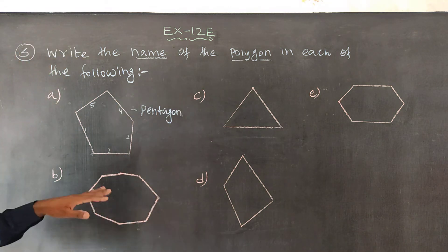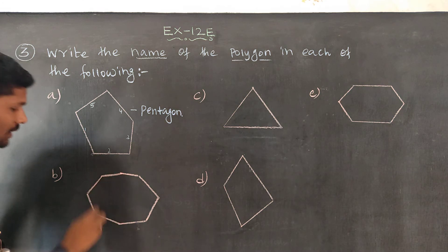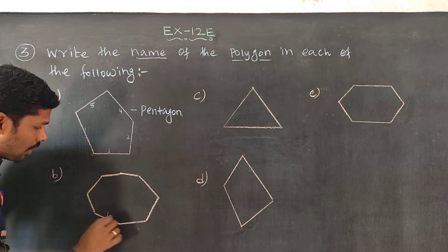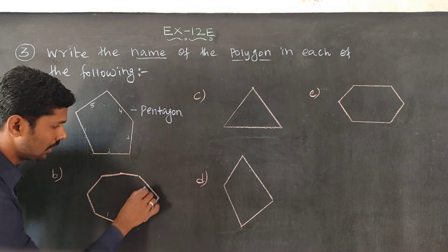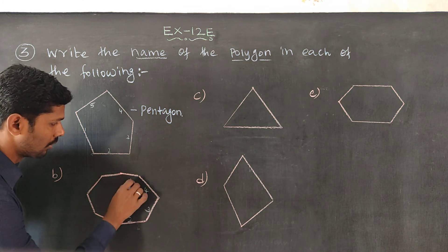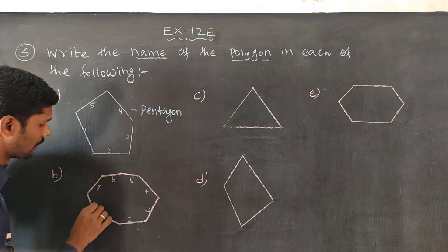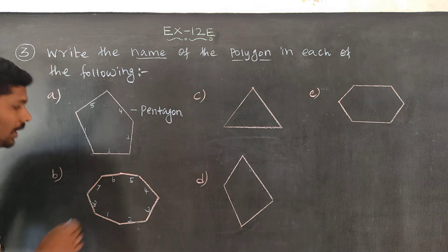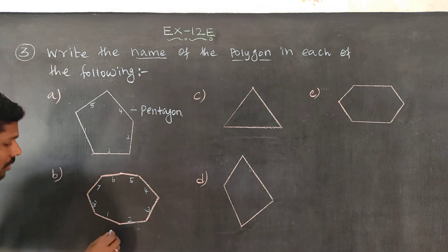Next, B. 8 other sides of the circle — 1, 2, 3, 4, 5, 6, 7, 8. Eight sides of the circle, so this is octagon.